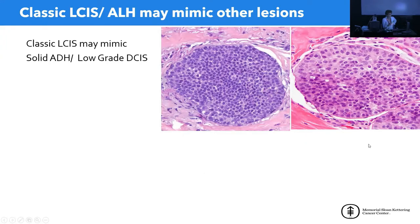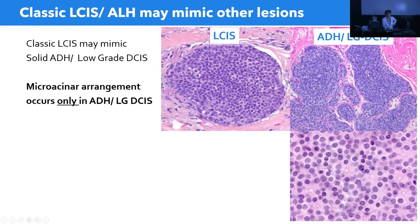The major differential diagnosis is between LCIS and solid ADH or low-grade DCIS. What helps is finding focal areas with polarization of the epithelial cells — little glands better identified at medium to low power. The finding of this microacinar arrangement does not occur in lobular neoplasia. If you find it, you can be almost 100% sure this will be an E-cadherin-positive ductal proliferation.